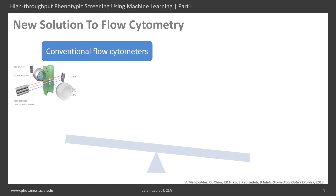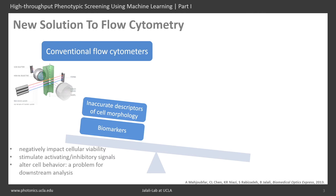However, each cell is represented with a single value per detection channel, and most of the time it requires labeling with specific biomarkers for acceptable classification accuracy.